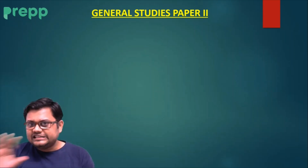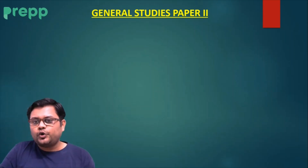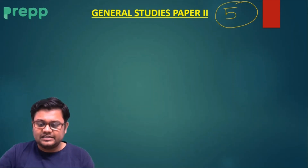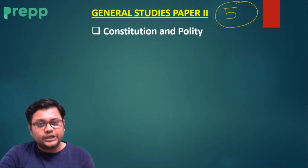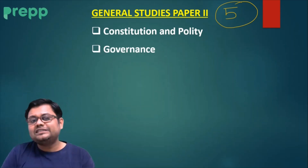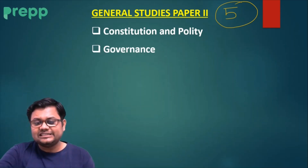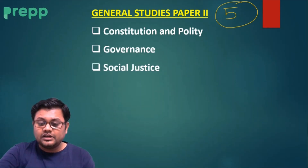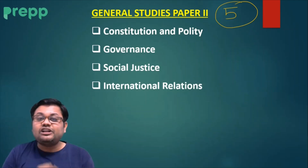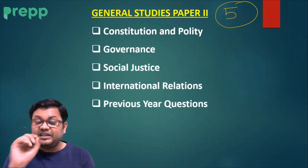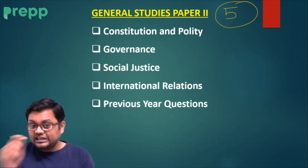In GS Paper 2, you have to prepare a total of 5 sections: Number 1 is Constitution and Polity, Number 2 is Governance, then Social Justice, Number 4 is International Relations, and the last one is Previous Year Questions.